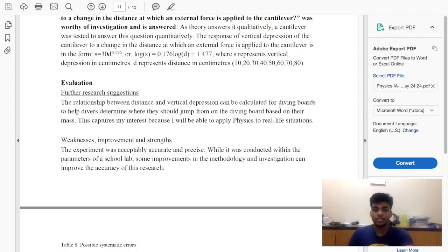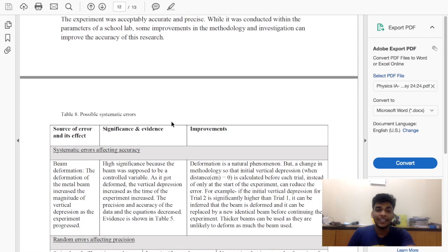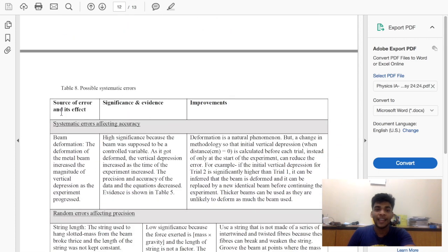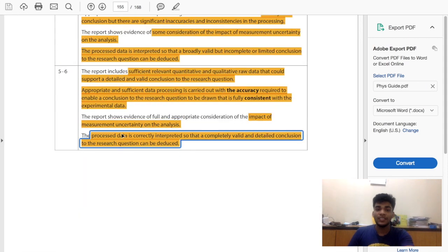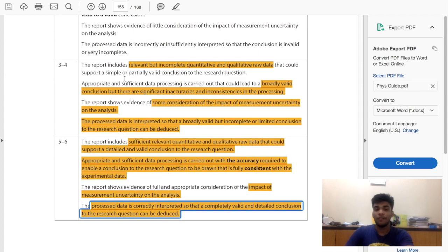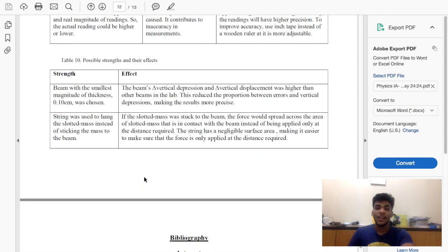After that, evaluation. I thought these were great ideas: research suggestions and weaknesses, improvements and strengths, with source of error and its effect, significance, and evidence. You should look online for common errors in your experiment. It's really important, evaluation guys.